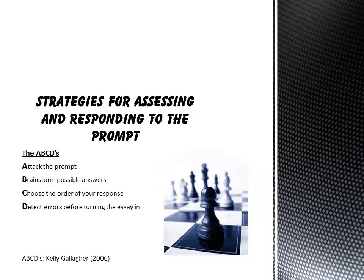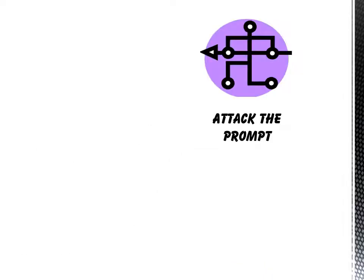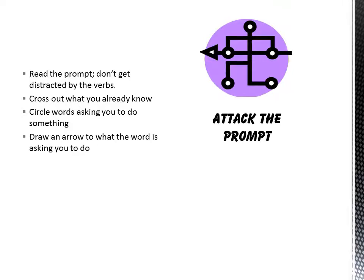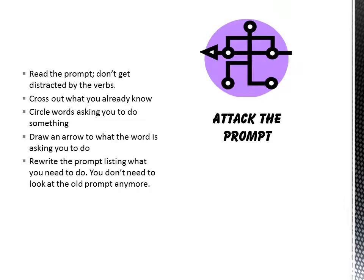I'm going to walk you through each one of these steps carefully, and by the end I think you'll have a really good idea of how to deal with these prompts. The first part: Attack the prompt. What does that mean? First, you have to read the prompt. A key part here is don't get distracted by verbs — there are a lot of verbs in the prompt. Second, cross out what you already know. Third, circle words asking you to do something. Then draw an arrow to what that word is asking you to do. Finally, rewrite the prompt listing what you need to do — and then you won't need the old prompt anymore. You're basically trying to refine and narrow what's being asked of you.